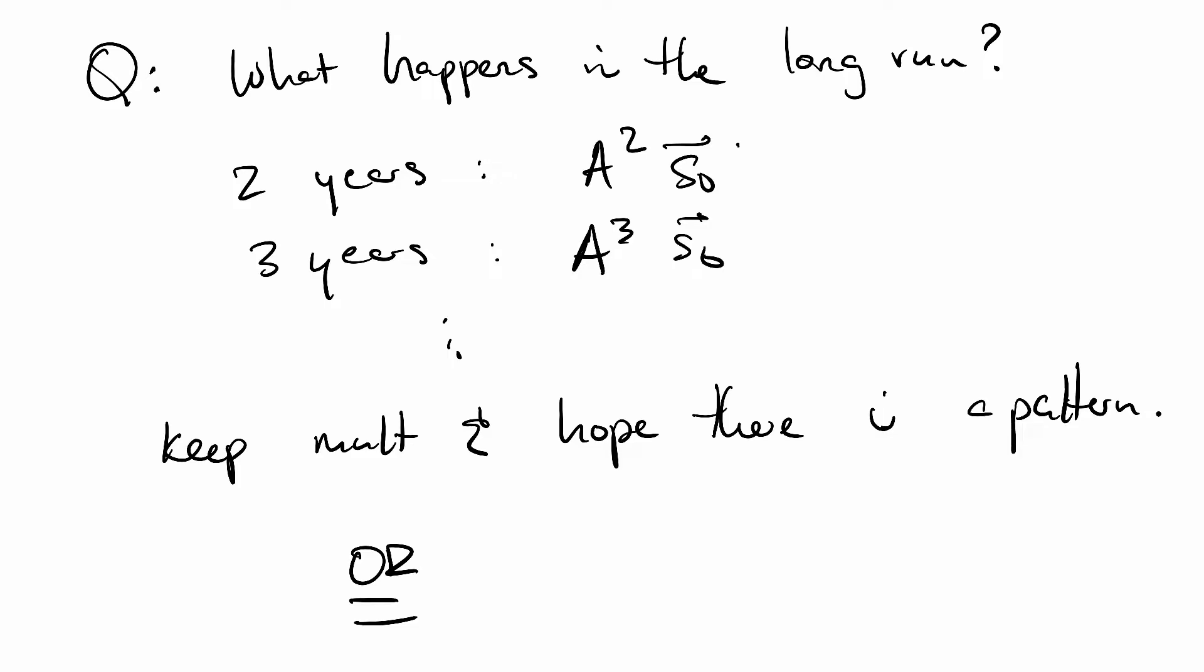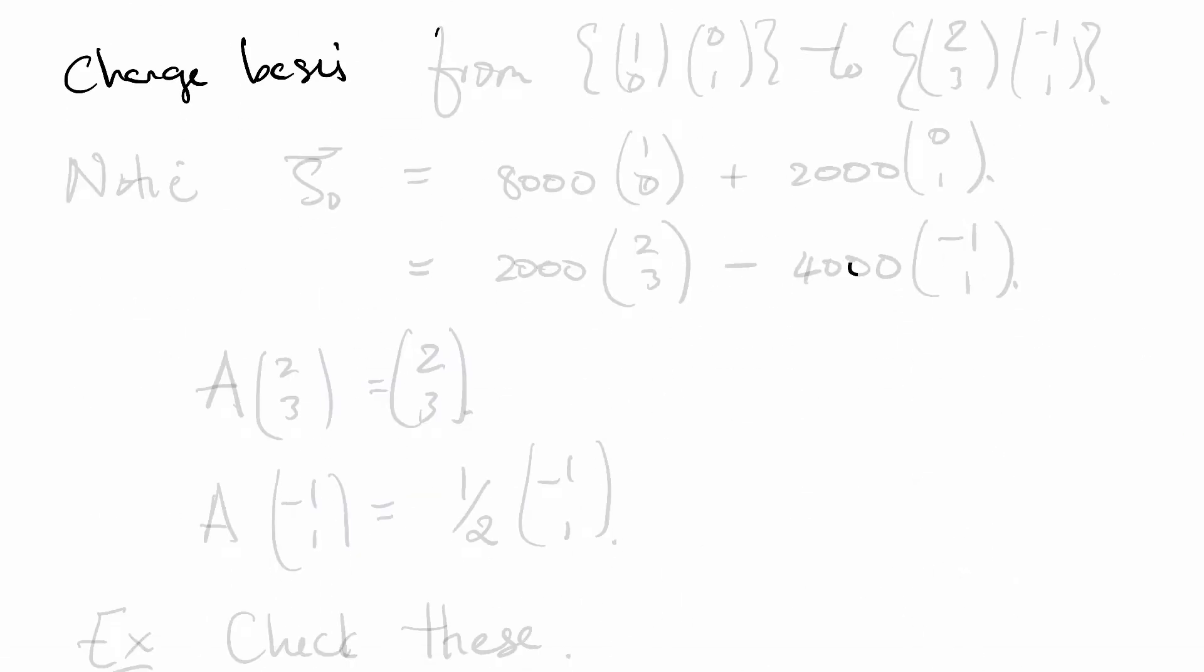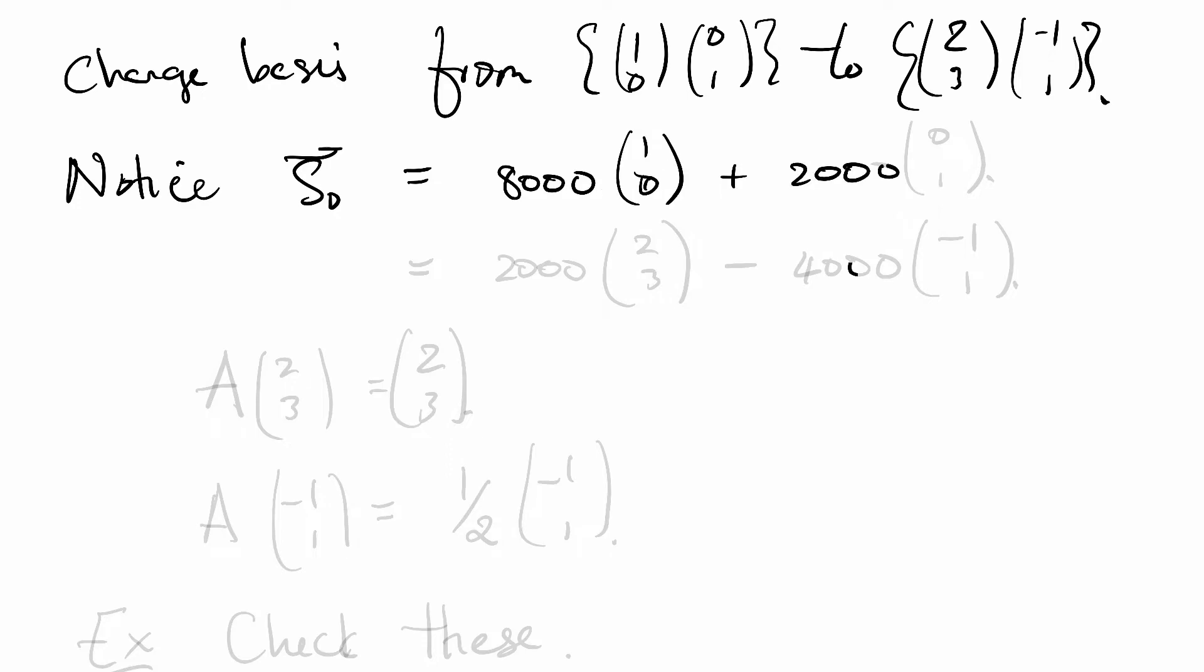Here's what we're going to do. We're going to change our basis from our standard basis (1,0), (0,1) to our non-standard basis (2,3), (-1,1). And we're going to notice that our initial state vector is just going to be represented as 8,000 times E₁ plus 2,000 times E₂, but we can also represent it in terms of our new basis - this is going to be 2,000 times (2,3) minus 4,000 times (-1,1).